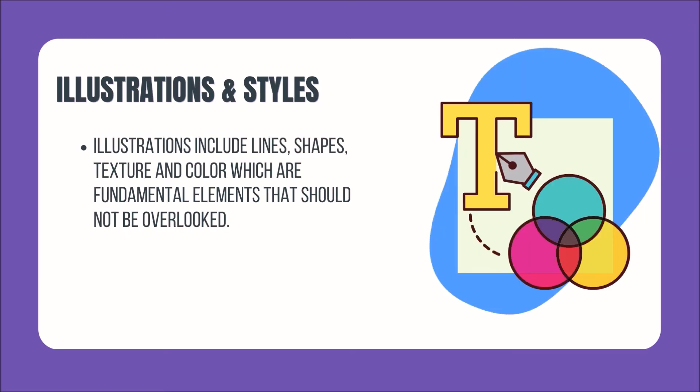Next are the basic web design elements. First, we have Illustrations and styles. Illustrations include lines, shapes, texture, and color, which are fundamental elements that should not be overlooked. Lines are used to organize, connect, and separate information and design elements. Combined with shapes, color, and texture, they form a visual grammar which you can use to communicate.